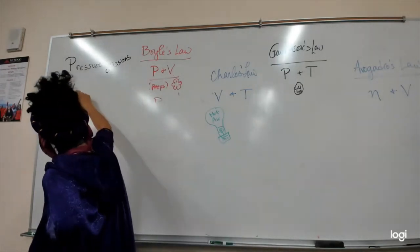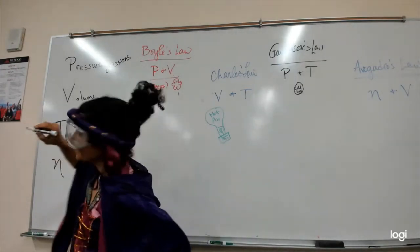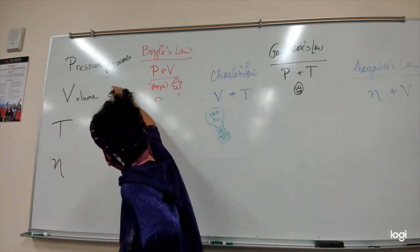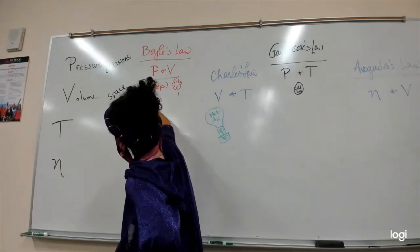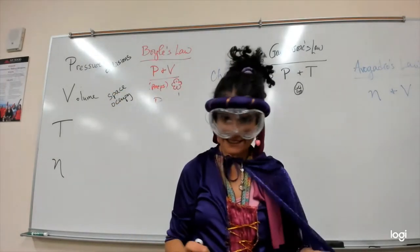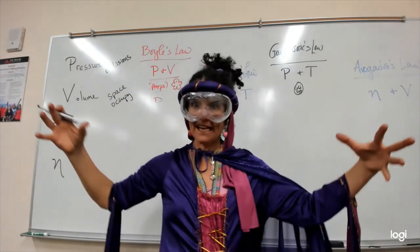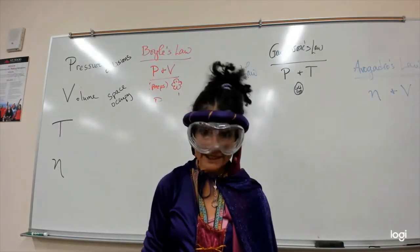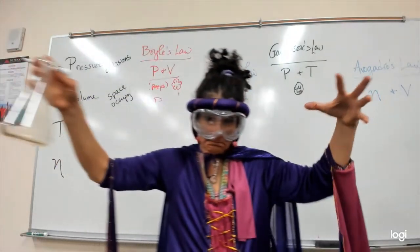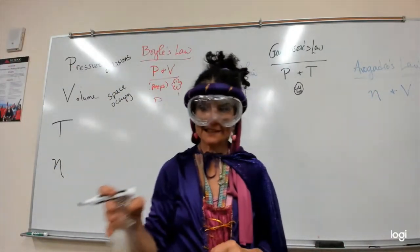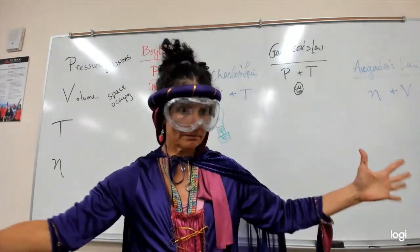V is for volume. I feel like a Dr. Seuss book. Volume is the space occupied by the gas. That is very unique about gases. Gases can expand and then you can contract them, but they'll always take up all the space. We can take this whole room and push the gases into this flask, and when we open it up, they'll expand.